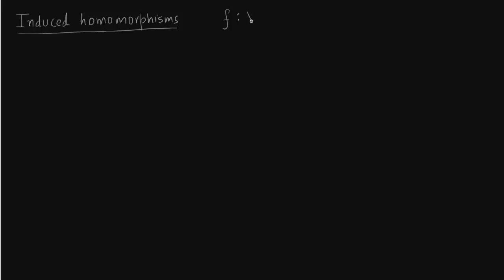Here we talk about induced homomorphisms. Given a function f from space X to space Y, we have already seen how to construct maps from chains in X to chains in Y — that is, from C_n(X) to C_n(Y). Now we want to talk about chains in the cohomology groups. So there is a map f from space X to Y, and we have already seen that within homology we get these chain maps, and within cohomology we construct from homology the homomorphisms. This is what we had seen before: chain maps from X to chain maps in Y.